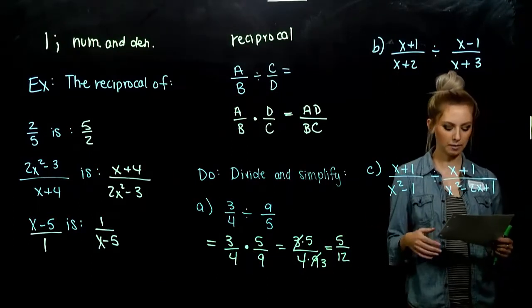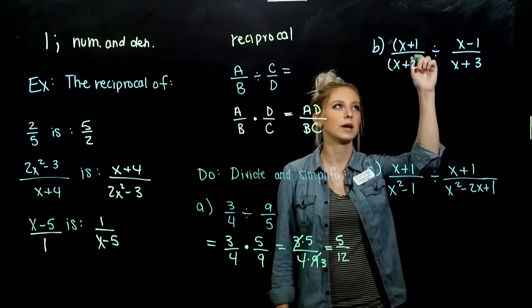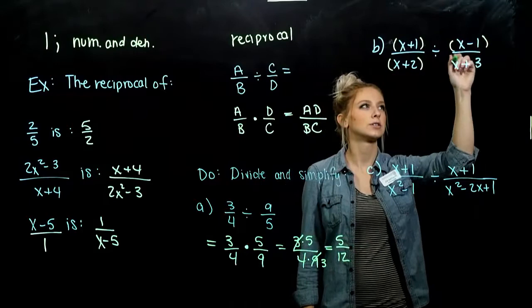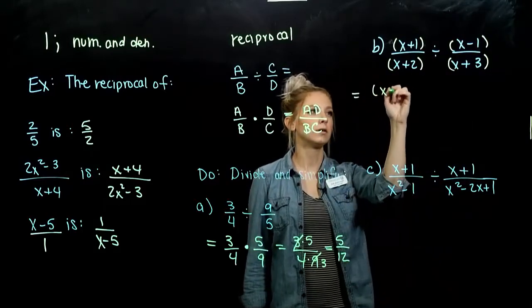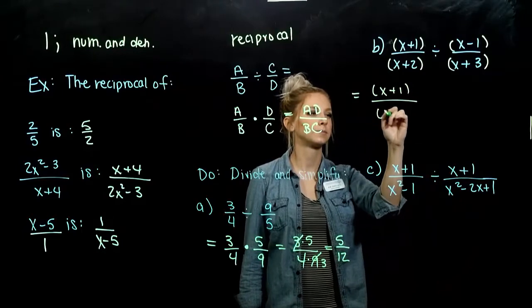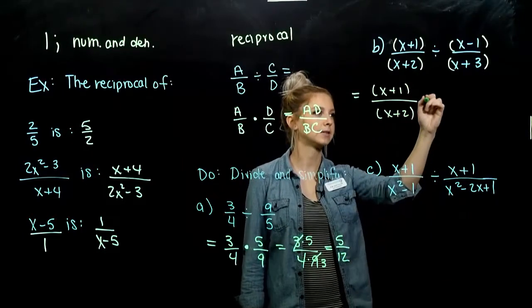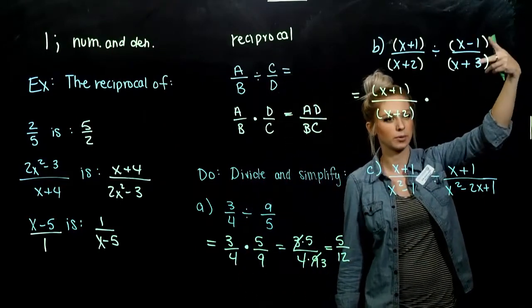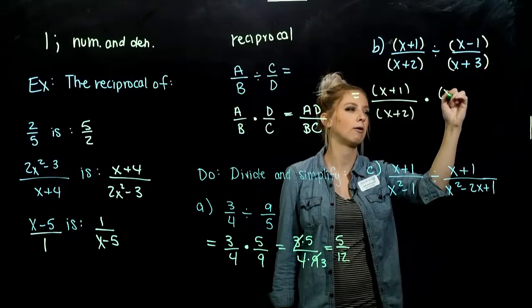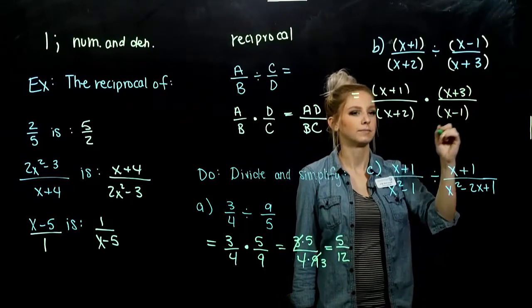A little bit more complicated. But the same story as multiplication. I'm going to group together what comes together just so I don't make any mistakes. The first one isn't going to change. Top is still the top. Bottom is still the bottom. But the second one, now I'm multiplying by its reciprocal. So what's up top now? X plus 3 and what's down below? X minus 1.